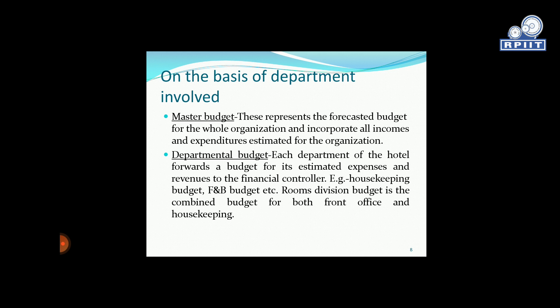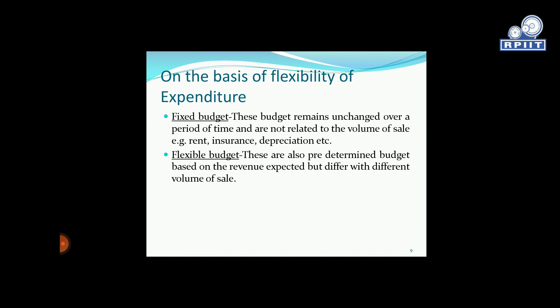Under the departmental budget, each department of the hotel forwards its estimated expenses and revenue to the financial controller. For example, housekeeping budget, F&B budget, room division budget, and combined budget for both front office and housekeeping department.